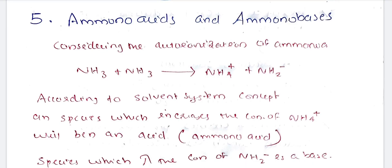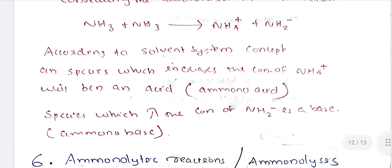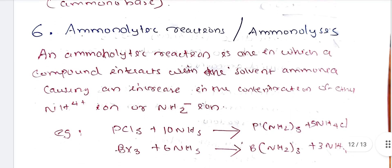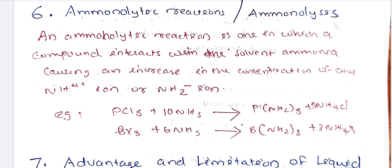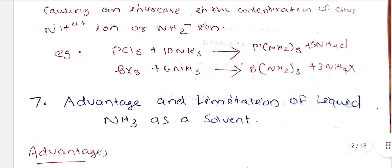Considering the auto-ionization of ammonia: NH3 + NH3 → NH4⁺ + NH2⁻. The solvent system concept applies here with NH4⁺ as the acid and NH2⁻ as the base. An increase in the concentration of NH4⁺ or NH2⁻ ions constitutes an acid or base reaction. For example: PCl5 + 10NH3 gives P(NH2)5 + 5NH4Cl.